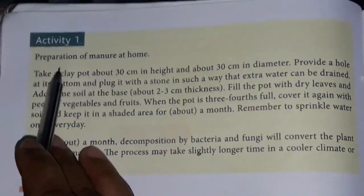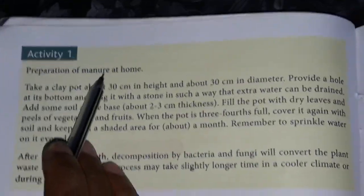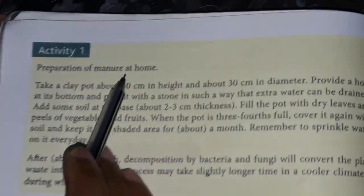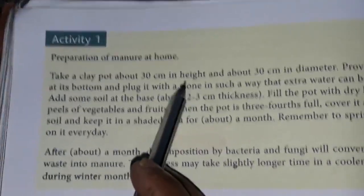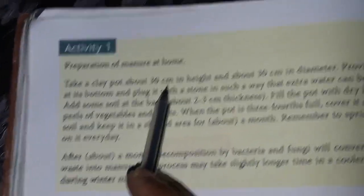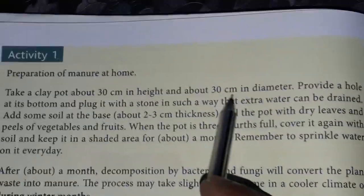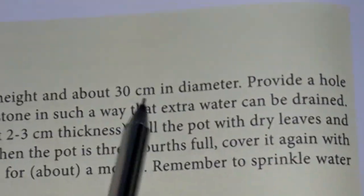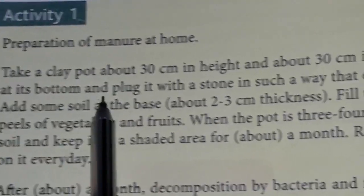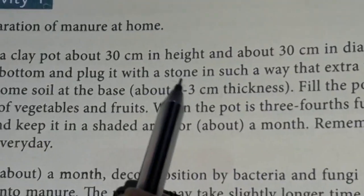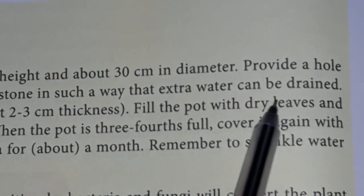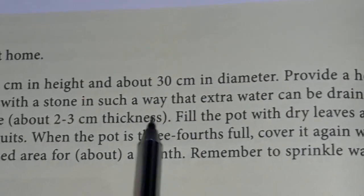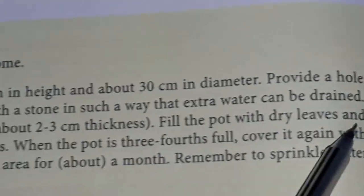There is one activity: preparation of manures at home. Take a clay pot about 30 cm in height and about 30 cm in diameter. Provide a hole at its bottom and plug it with a stone in such a way that extra water can be drained.